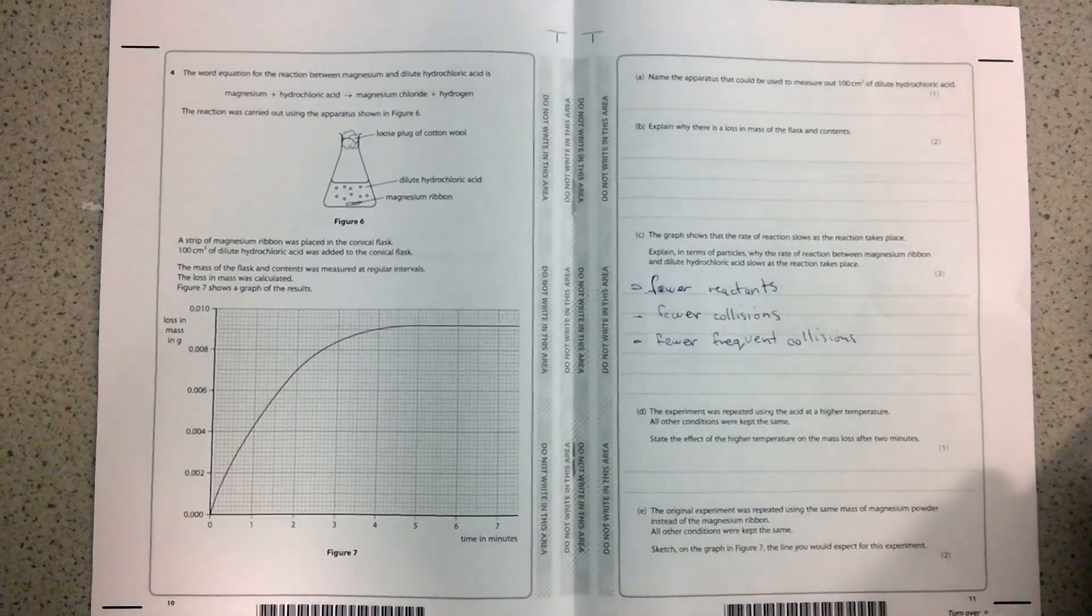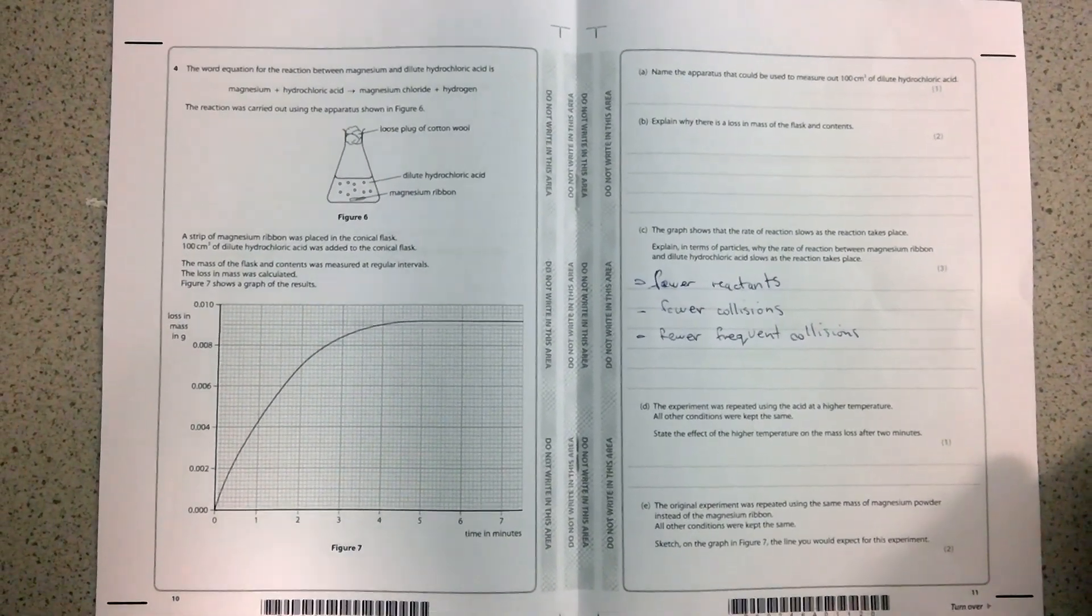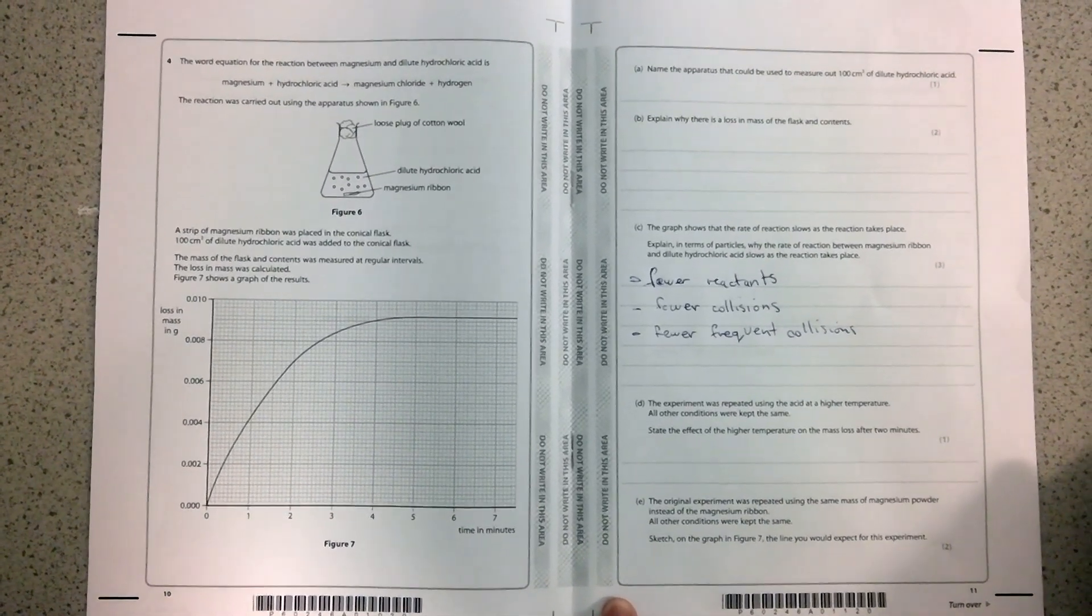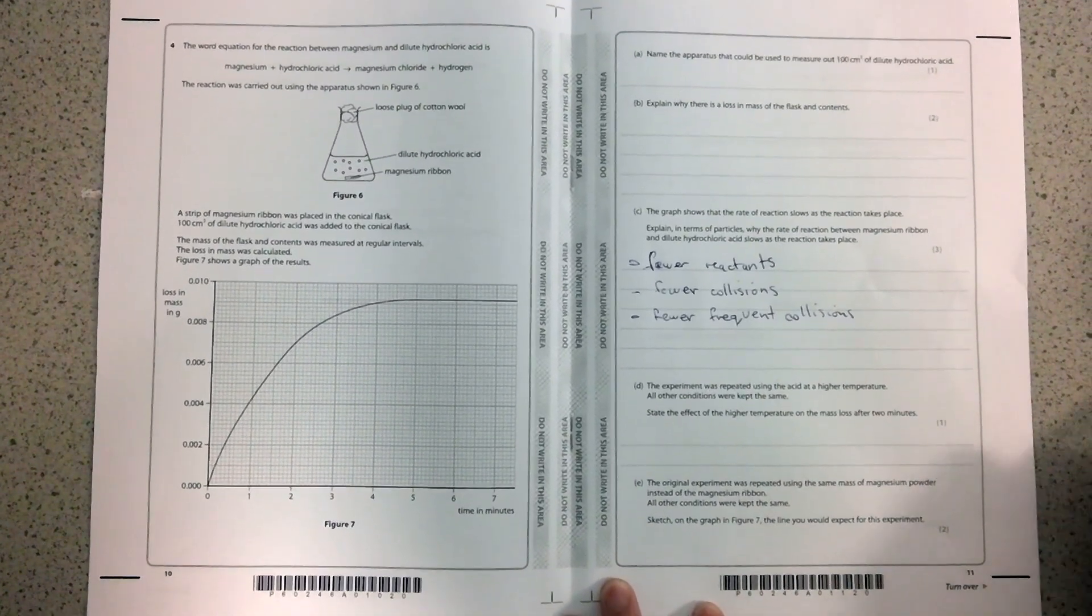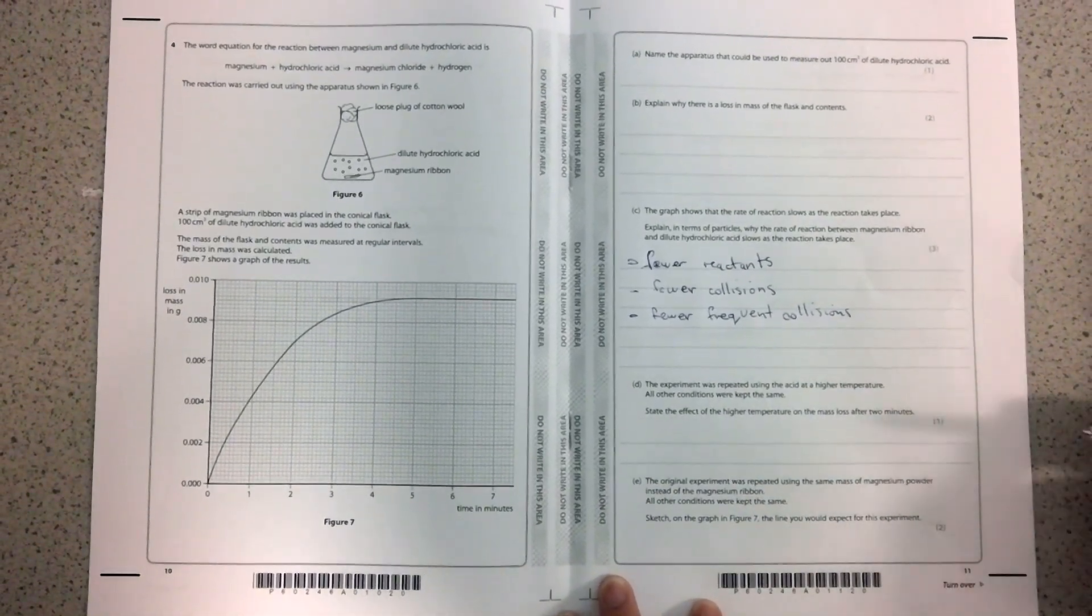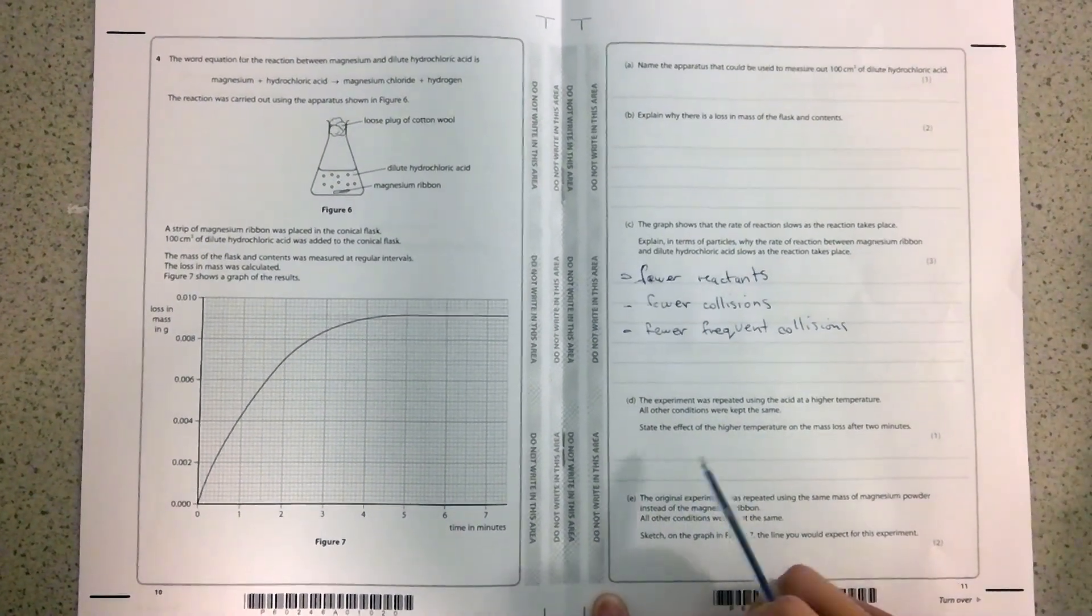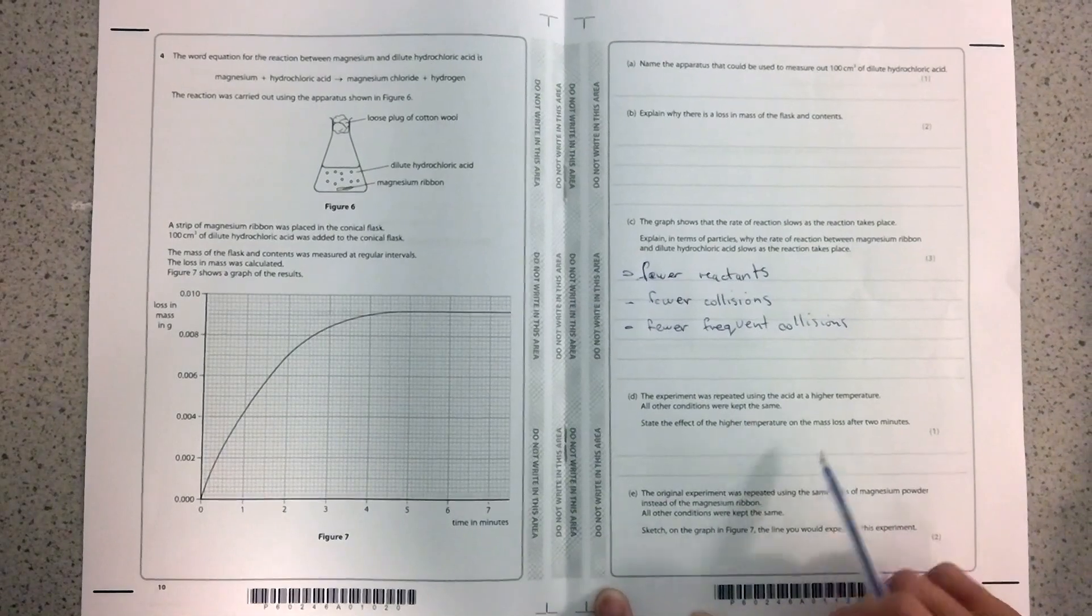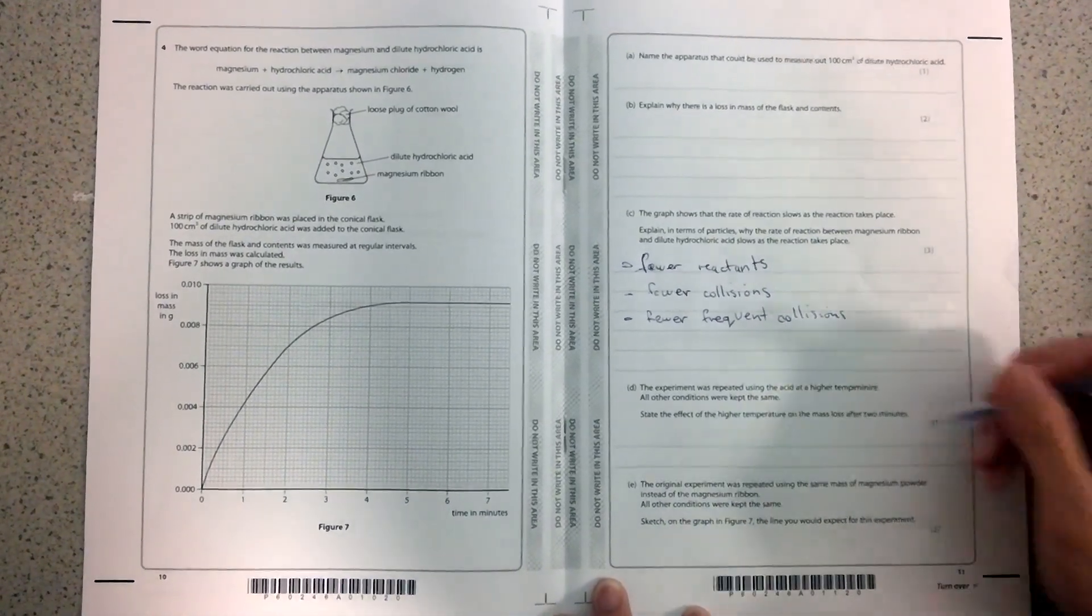For the next question, the experiment was repeated using acid at a higher temperature. All of the conditions were kept the same. State the effects of the higher temperature and the mass loss after two minutes. This is just worth one mark, so all you need to do is identify that the higher temperature will make the reaction go faster. But then, how can you know that is through the mass loss increasing or being higher?